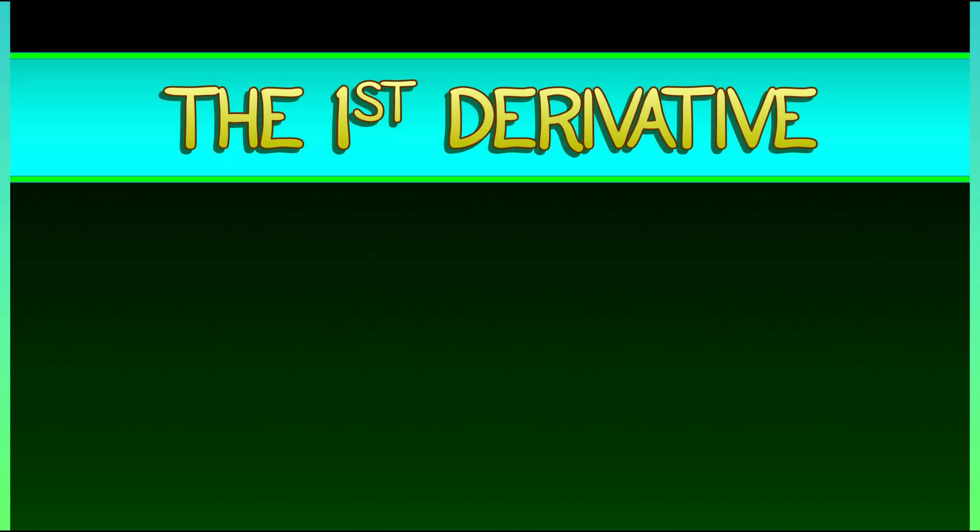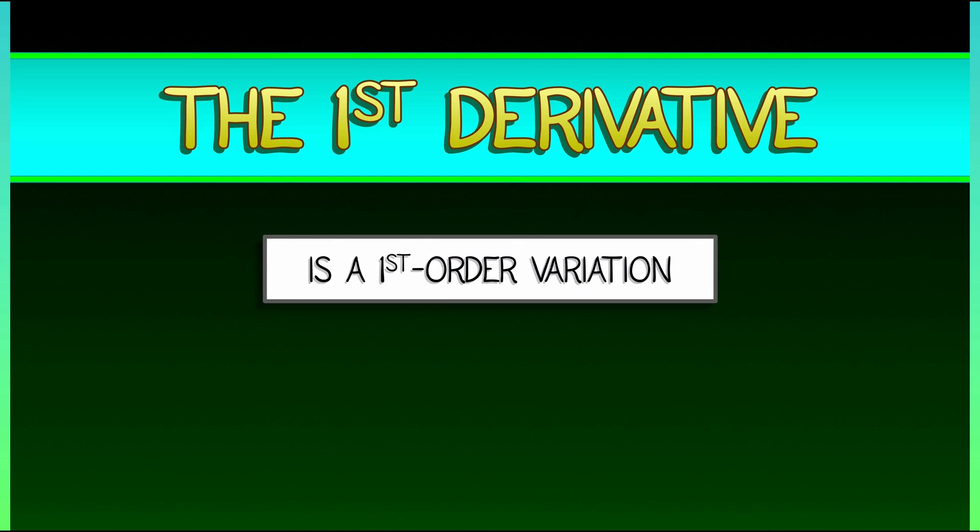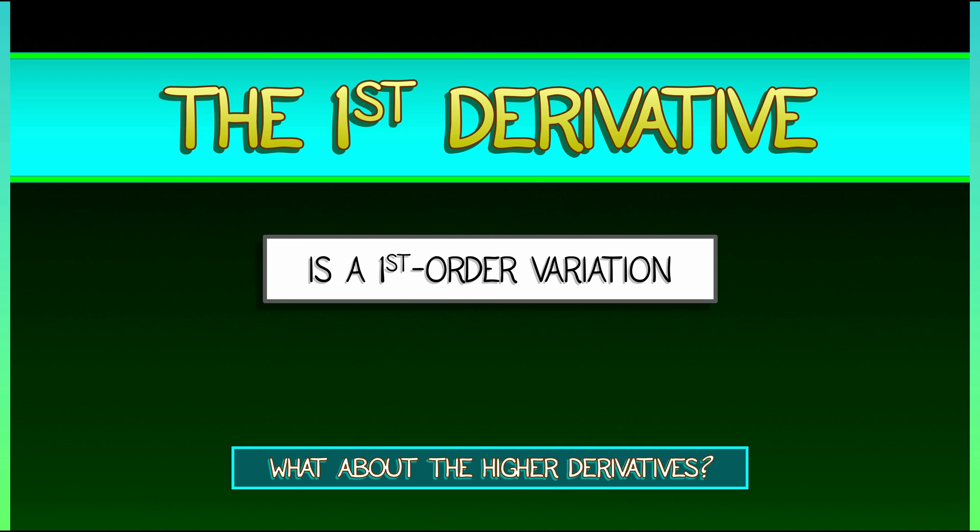We've seen that the first derivative can be interpreted as a coefficient of first-order variation. This is the idea that we've been working with for the past few chapters. But now, it's time to turn to the higher derivatives. What about them?